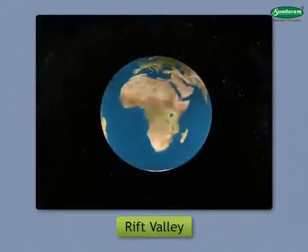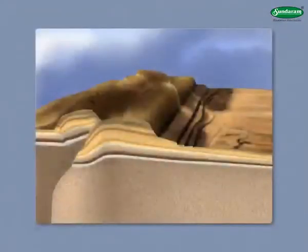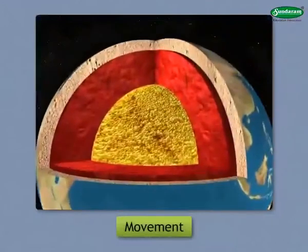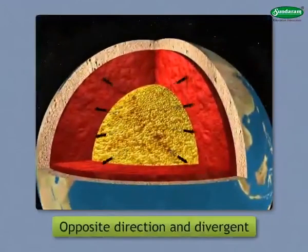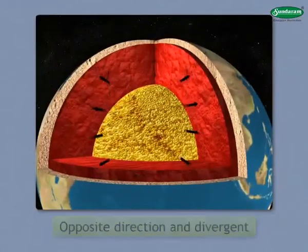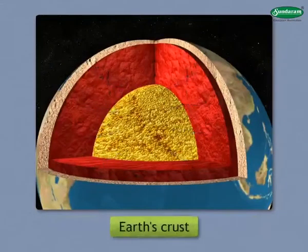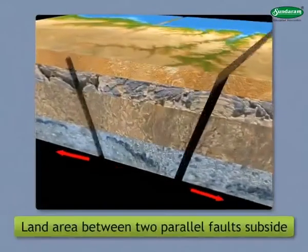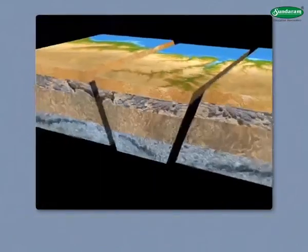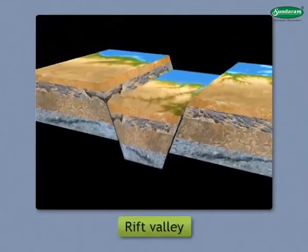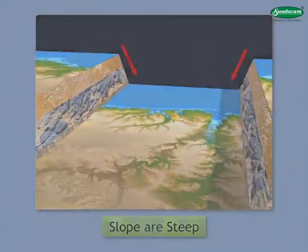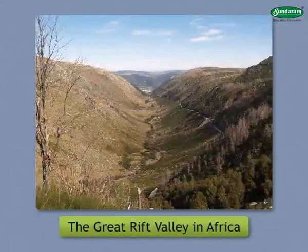Rift Valley. Now let us see the formation of Rift Valley. When the movement in the interior of the earth is in the opposite and divergent direction, it leads to tension in the earth's crust. Sometimes, the land area between two parallel faults subsides. Such areas of subsidence are called Rift Valleys. The slopes of Rift Valleys are quite steep. For example, the Great Rift Valley in Africa.